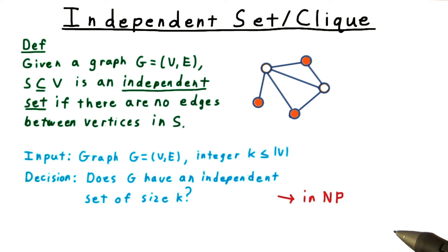Given a subset of the vertices, it's easy to count them to make sure that there are indeed K and check that there are no edges between them.